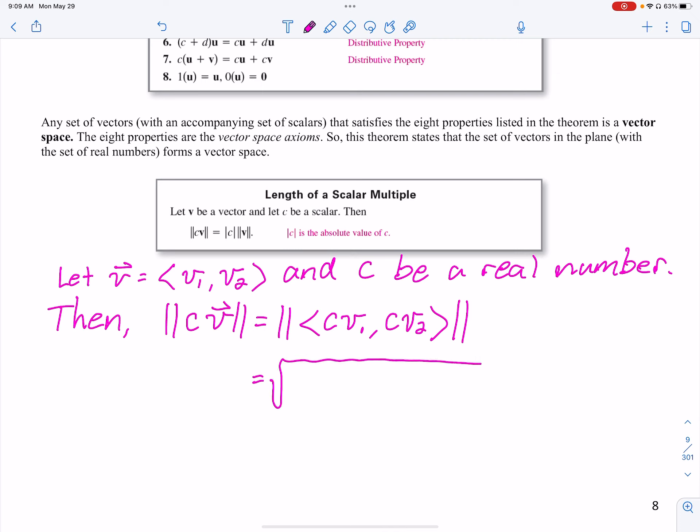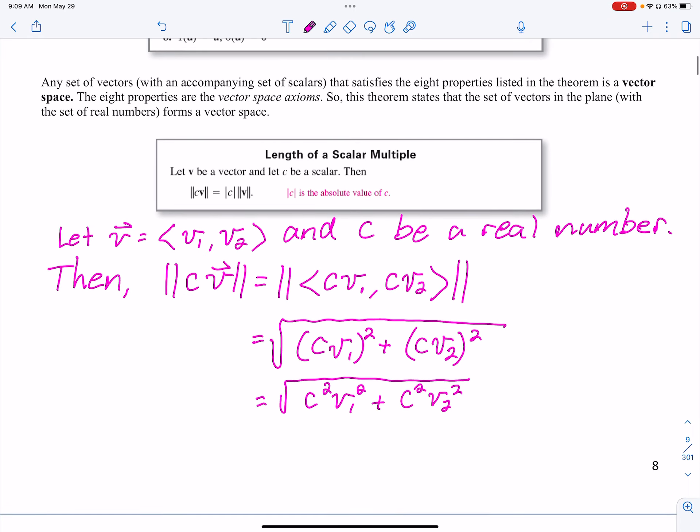Then Cv is equal to the magnitude of Cv1, Cv2. I just distributed it. Let's do the magnitude now. So the magnitude says take the square root of Cv1 squared plus Cv2 squared. That is the definition of magnitude. This is C squared, V1 squared, plus C squared, V2 squared. And notice that we can actually factor out that C squared. So we're just following the algebra. This gets me the square root of C squared times the square root of V1 squared plus V2 squared.